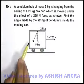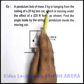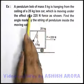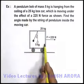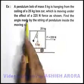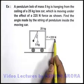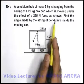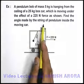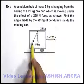In this example, a pendulum bob of mass 5 kg is hanging from the ceiling of a 25 kg box car, which is moving under the effect of a 225 newton force, as shown. We are required to find the angle made by the string of pendulum inside the moving car.